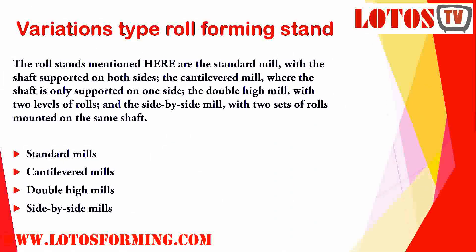Now we are going to the various types of roll forming stands. There are: the standard mill, with the shaft supported on both sides; the cantilever mill, where the shaft is only supported on one side; the double high mill, with two levels of rolls; and the side by side mill, with two sets of rolls mounted on the same shaft.